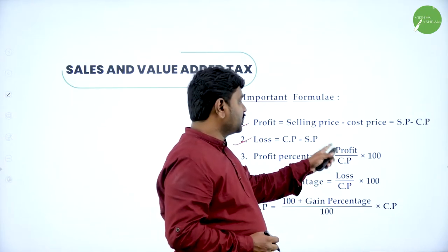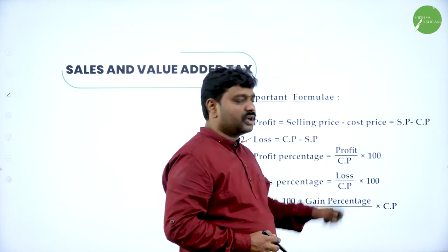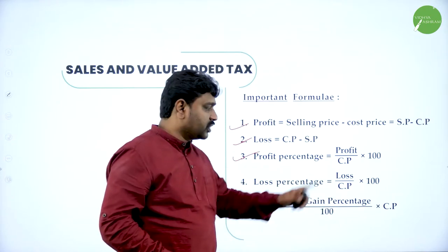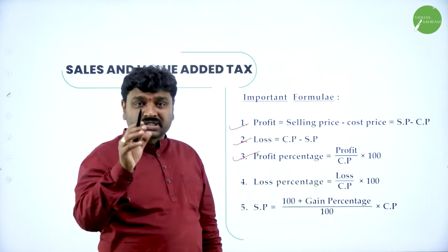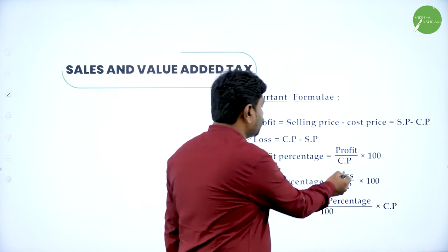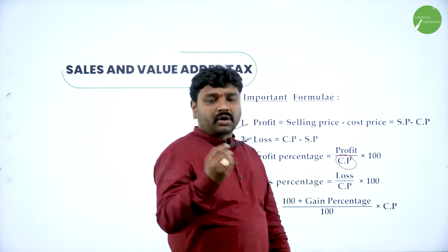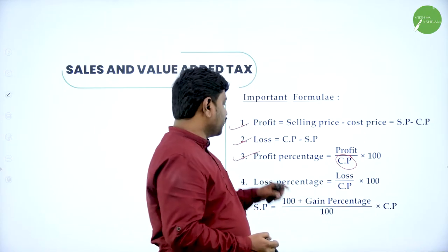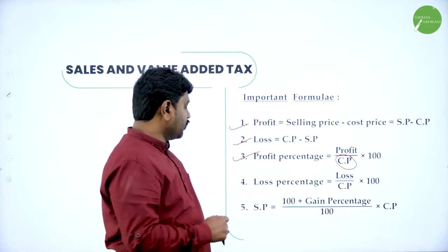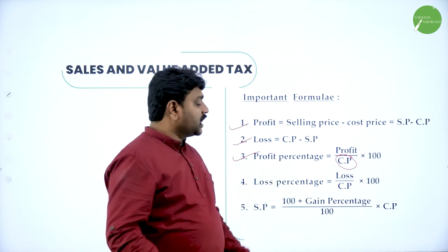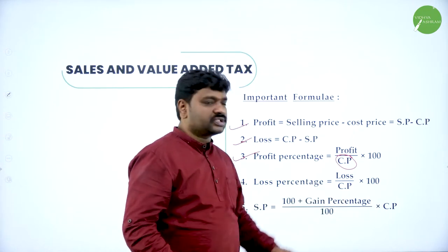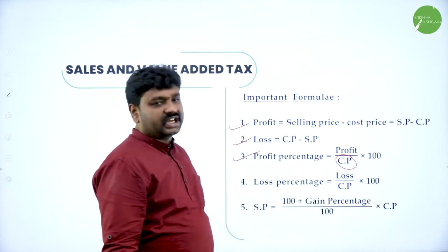To calculate profit percentage: SP minus CP divided by CP into 100. Loss percent is loss by cost price into 100. Dear students, profit percent or loss percent is always compared with respect to cost price. Profit by CP into 100 is profit percent; loss by cost price into 100 is loss percent. To calculate selling price when in profit: (100 plus profit percent) divided by 100, multiplied by CP.